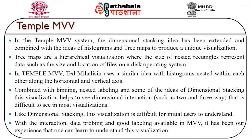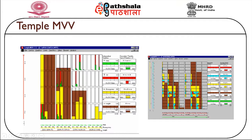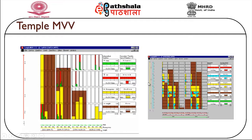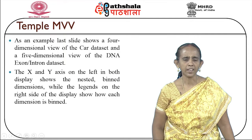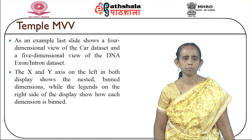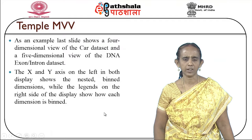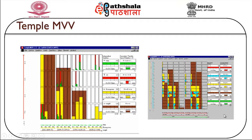Like dimensional stacking, Temple MV visualization is difficult for initial users to understand, but with interaction, data probing and good labeling, one can learn to understand it. An example shows a four-dimensional view of the car dataset and a five-dimensional view of the DNA dataset. The x and y axes in both displays show the nested binned dimensions, while the legends on the right-hand side describe how each binning has been done.